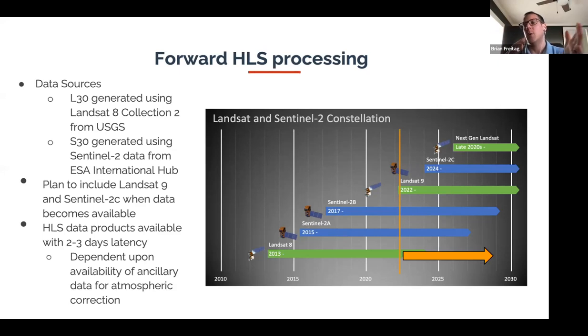The products are on a two- to three-day latency, meaning if a scene is sensed on March 1st the data won't be available until March 3rd or 4th. The reason is we're waiting for ancillary data for the atmospheric correction — the input data needed to produce surface reflectance from top-of-atmosphere reflectance typically has a two- to three-day latency. Whenever that ancillary data comes in we generate the data products, and they're surfaced through LP DAAC typically that same day.